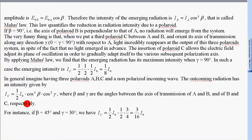For instance, if beta equal to 45 degrees and gamma equal to 30 degrees, we have Ic equal to 1/2 I0 times 1/2 times 3/4, that is 3/16 times I0.